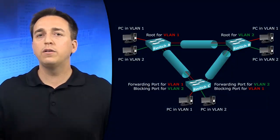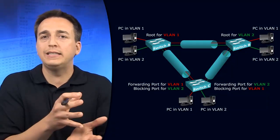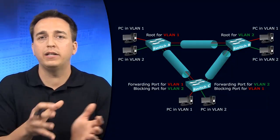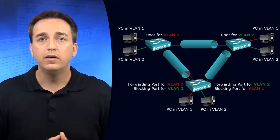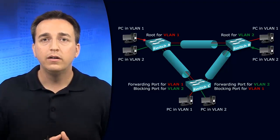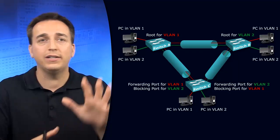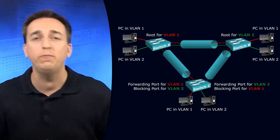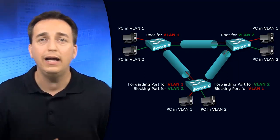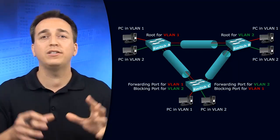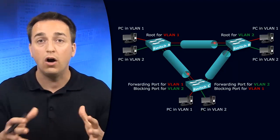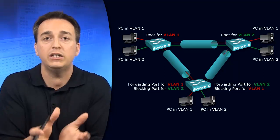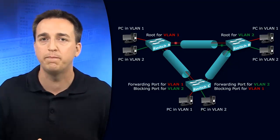However, by default, every single Spanning Tree instance is going to be the exact same. Every single VLAN is going to have the same root bridge. Every switch is going to have the same designated ports, root ports, and block ports because they're all making their decisions based on the same information.